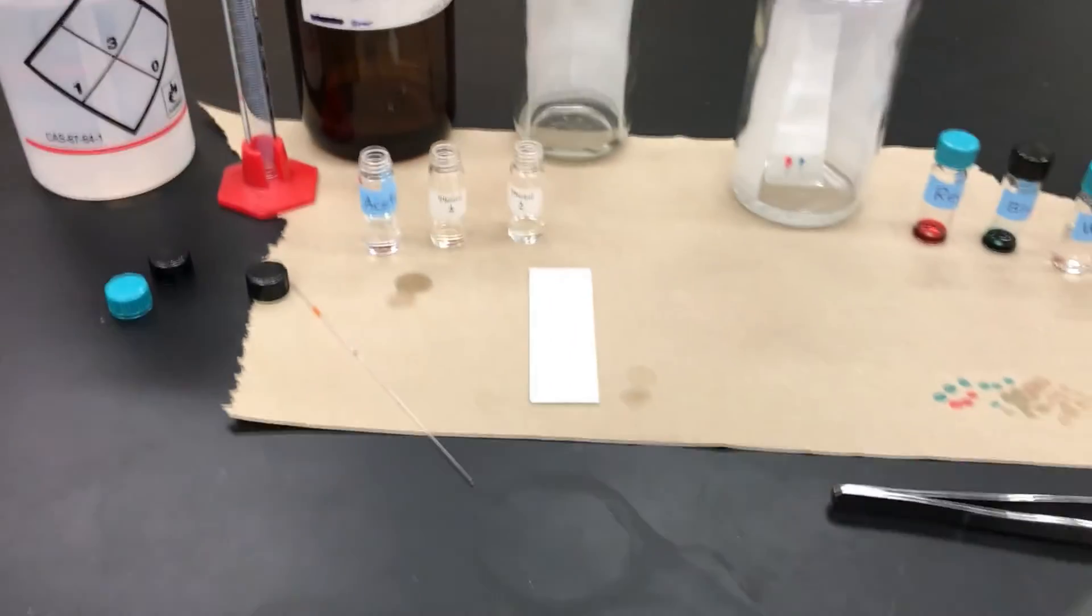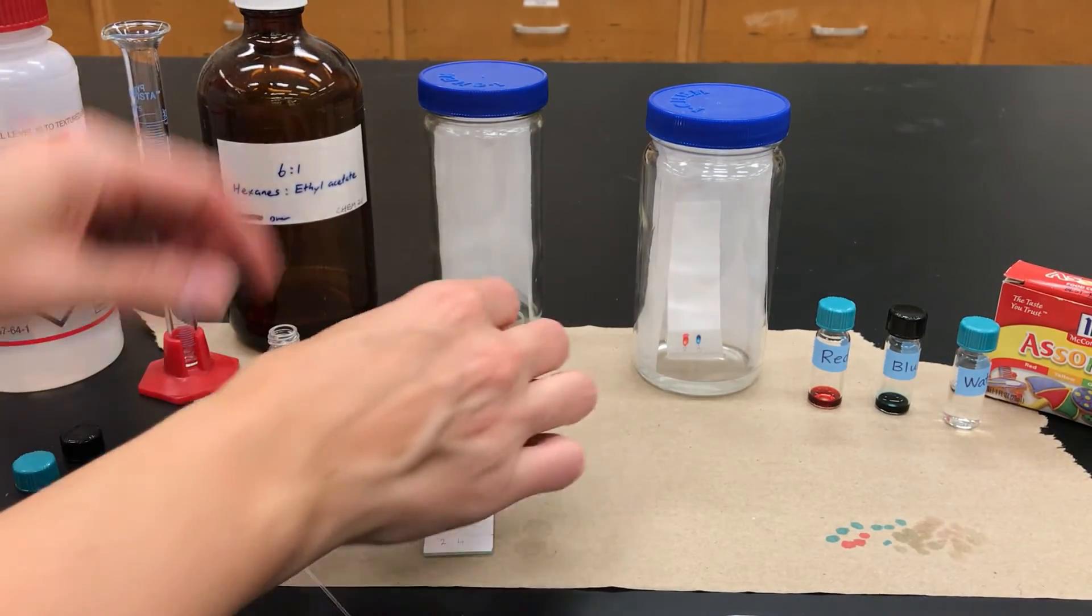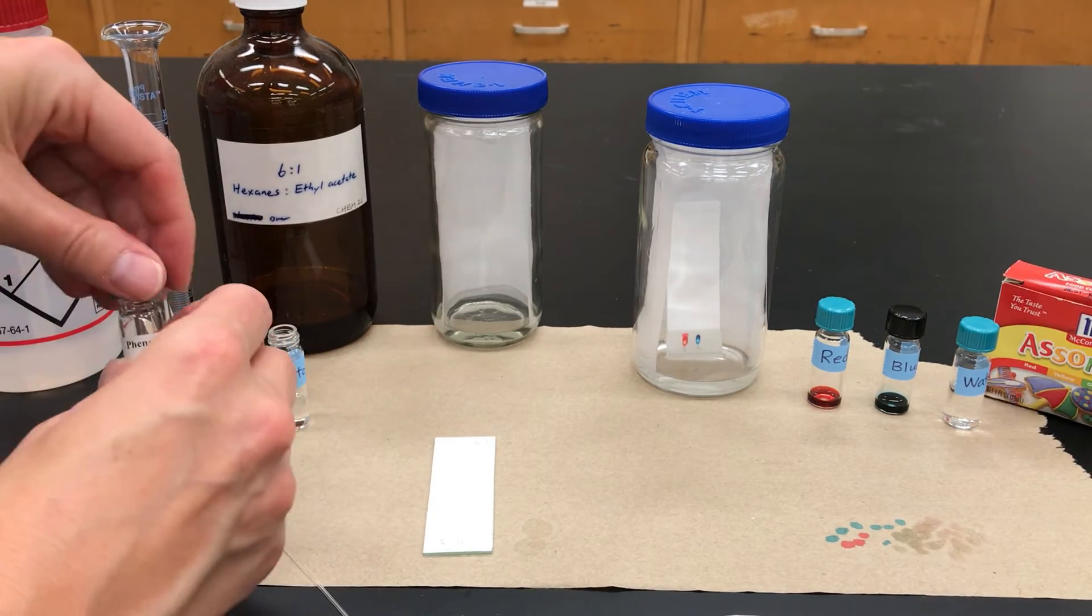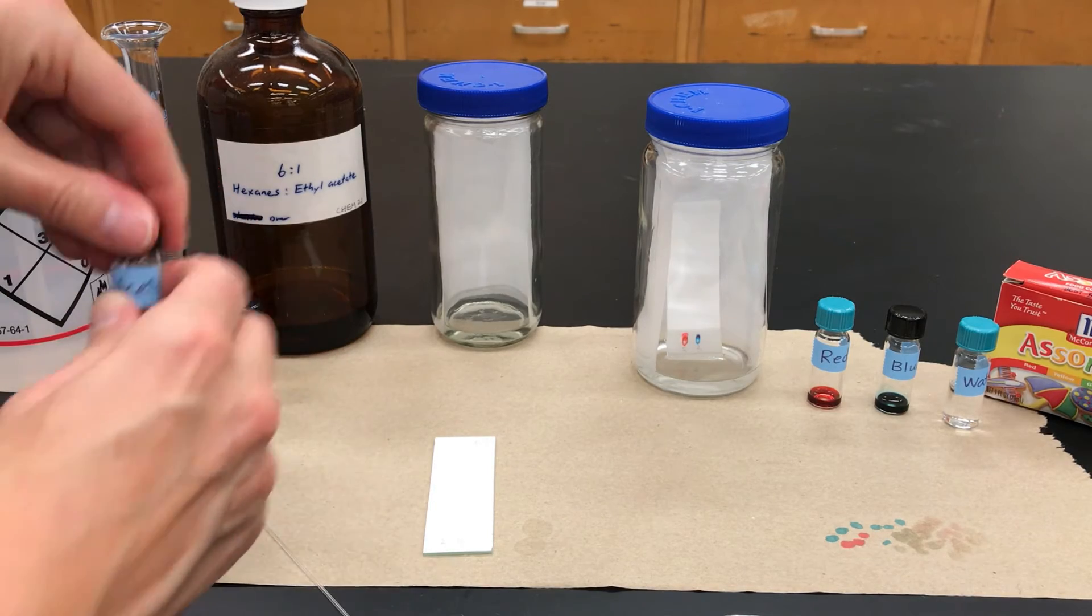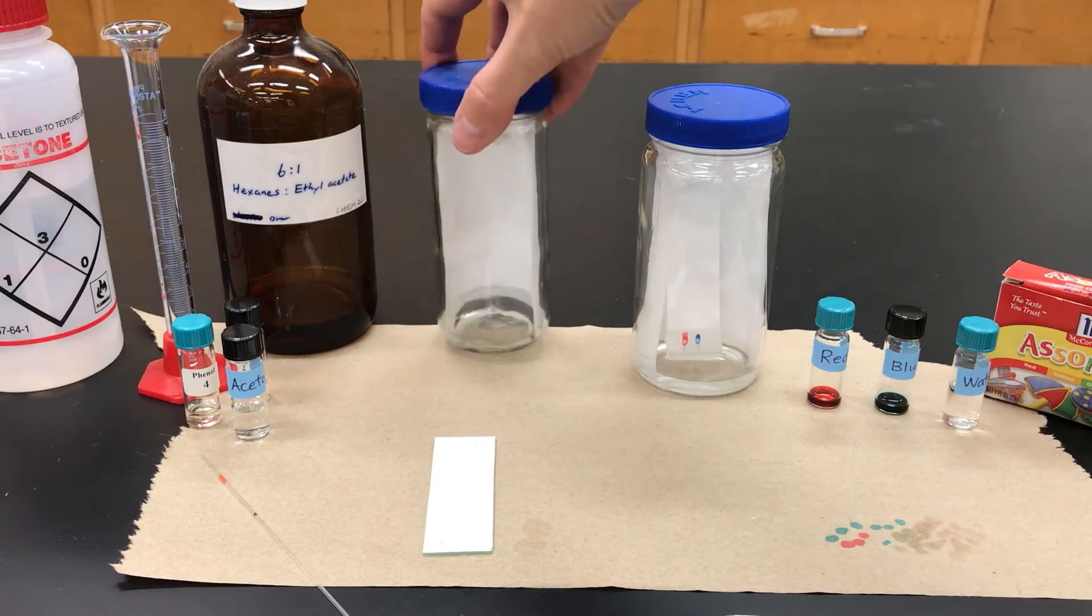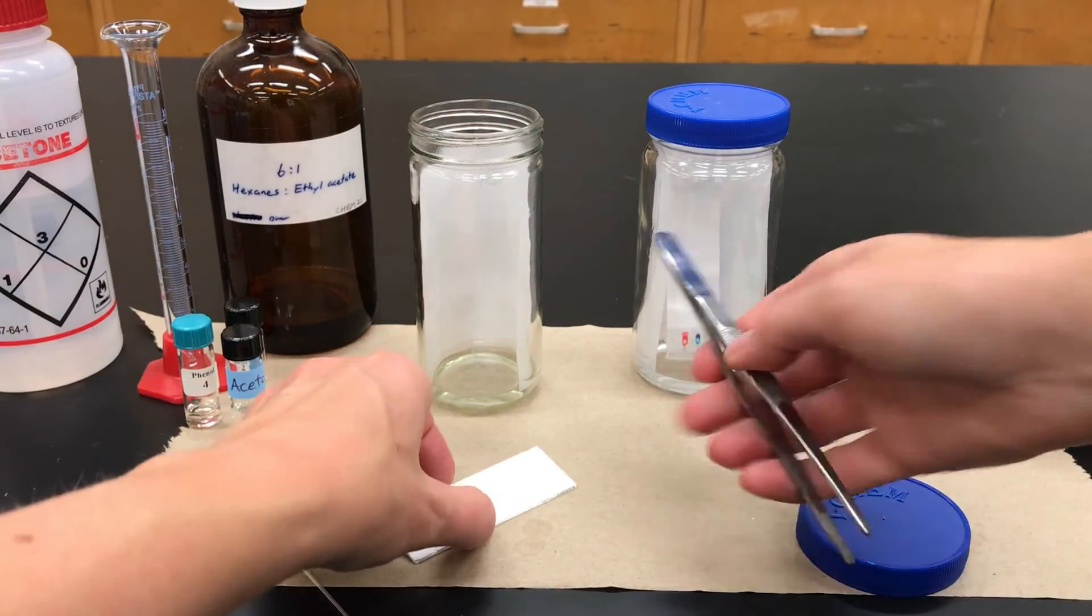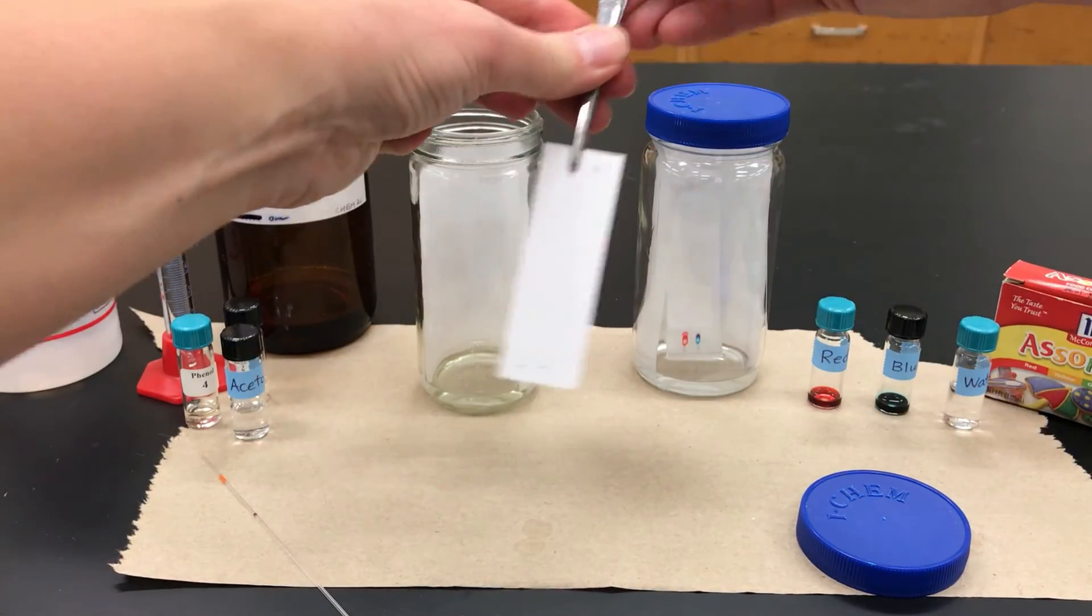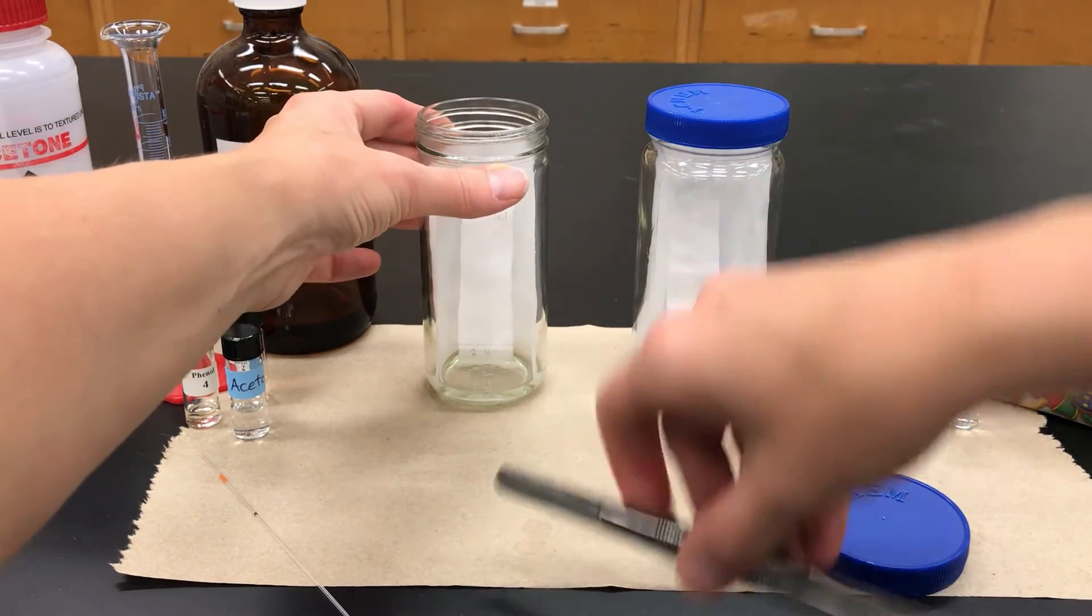And I rinsed with acetone. And I put on the lids so that I don't make a spill. And I'm going to do the same thing where I open up my TLC chamber. And I take my TLC plate that does have compounds on it even though you can't see it. And I put that in the chamber.